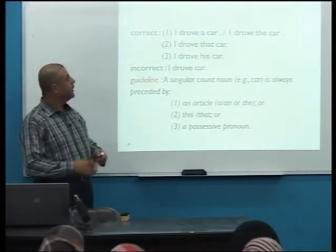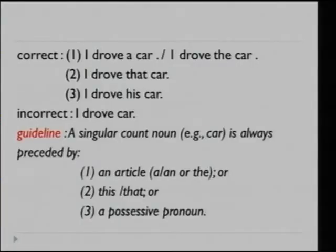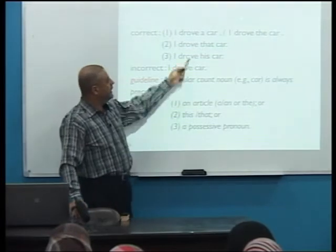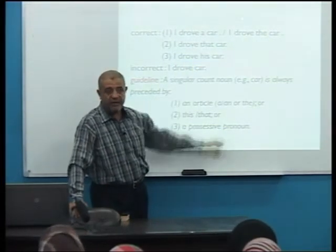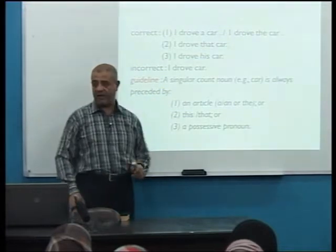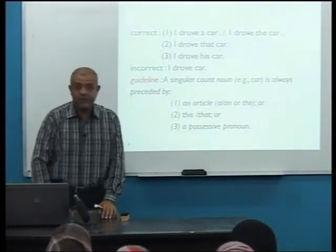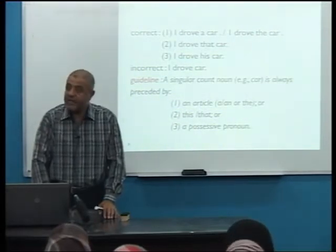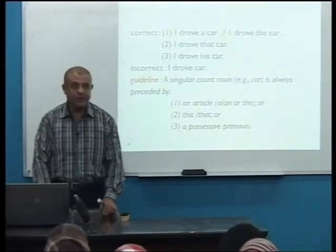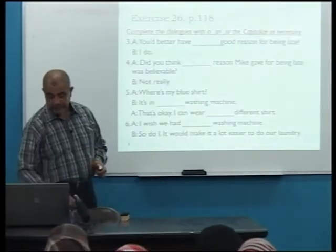'I drove a car / I drove the car / I drove that car / I drove his car.' A noun like 'car' can be preceded by a definite article, an indefinite article, a demonstrative, or a possessive. But never say 'I drove car,' 'I ate apple,' or 'I bought jacket.' Always precede the noun with one of these: 'I bought a jacket, I ate an apple, I read a story.'